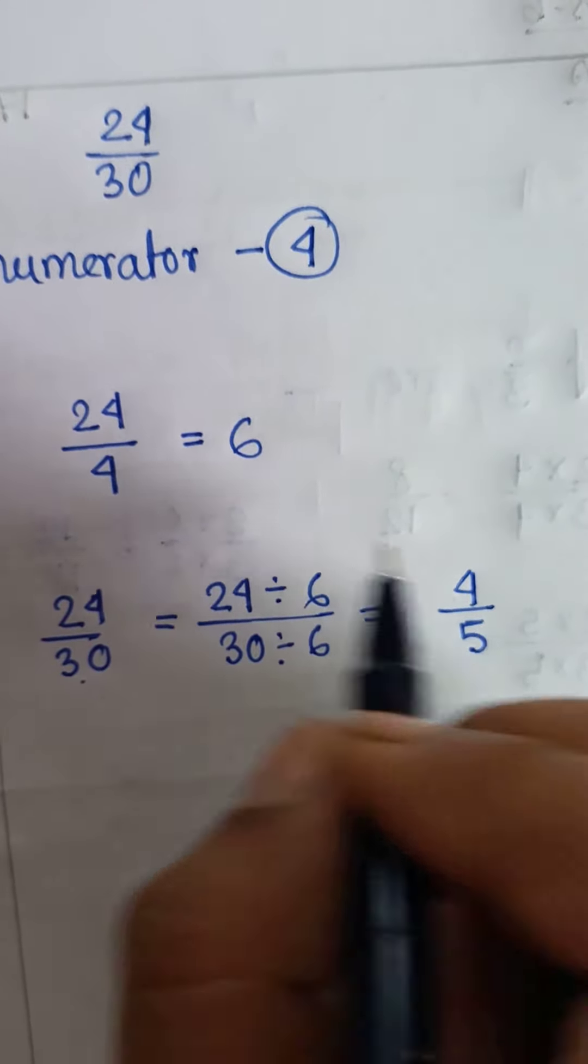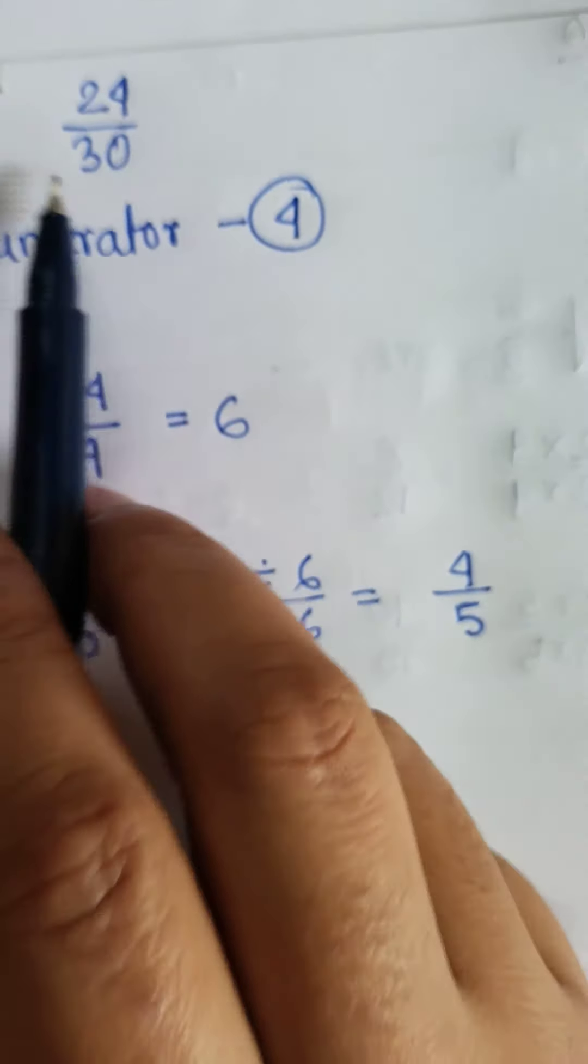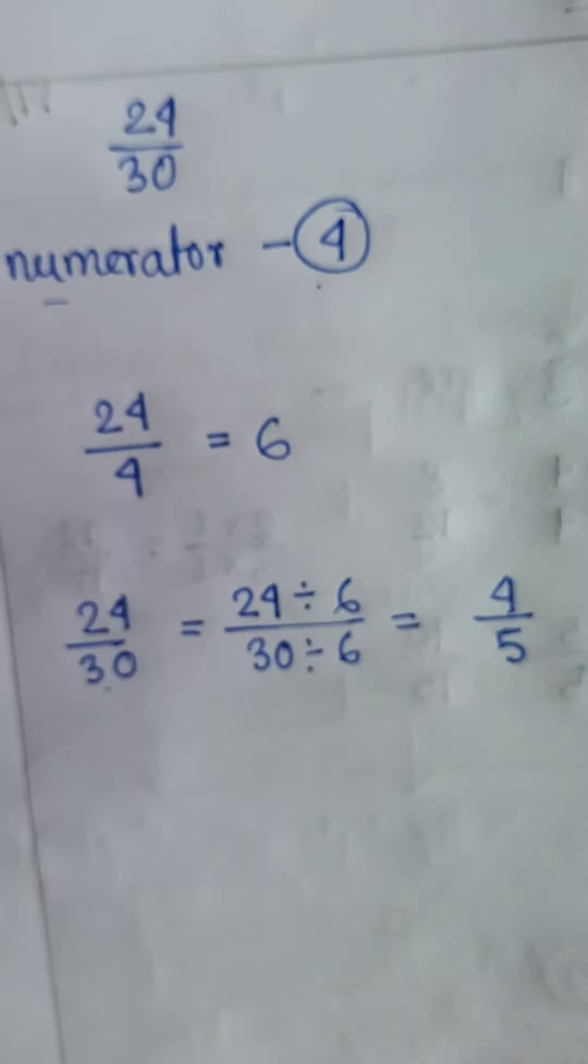This justifies the question: find the equivalent fraction of 24 by 30 having numerator 4. OK?